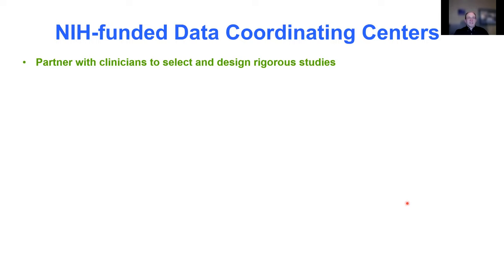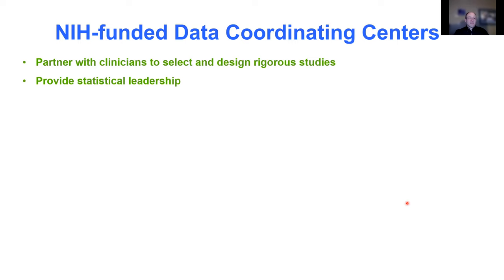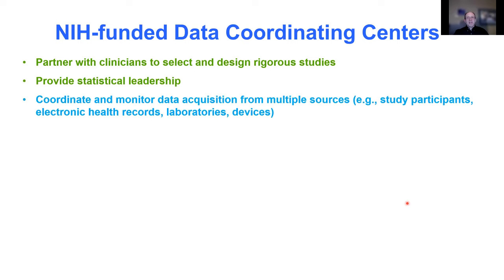As a biostatistician, I was trained in statistical methodology, mainly clinical trial design, other types of design, analyses, and so forth. But data coordinating centers do a lot more than that. In green, I'm listing things I was trained to do. Partnering with clinicians to select and design rigorous studies is actually why I got into biostatistics. My undergraduate work was in psychology and biology, and I had intended to go to medical school until I did some volunteer work at the local hospital.